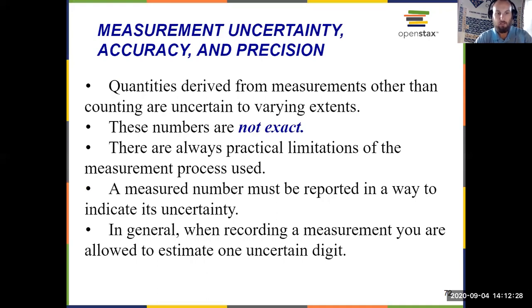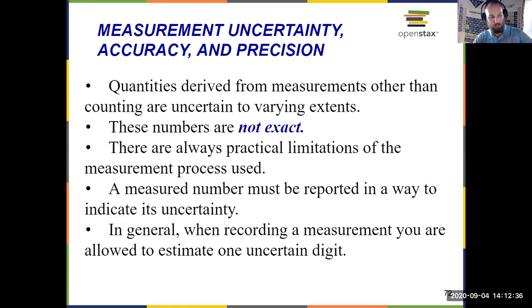We convey uncertainty by estimating one digit — this is called the digit of uncertainty. This is something that's best understood simply by practicing.